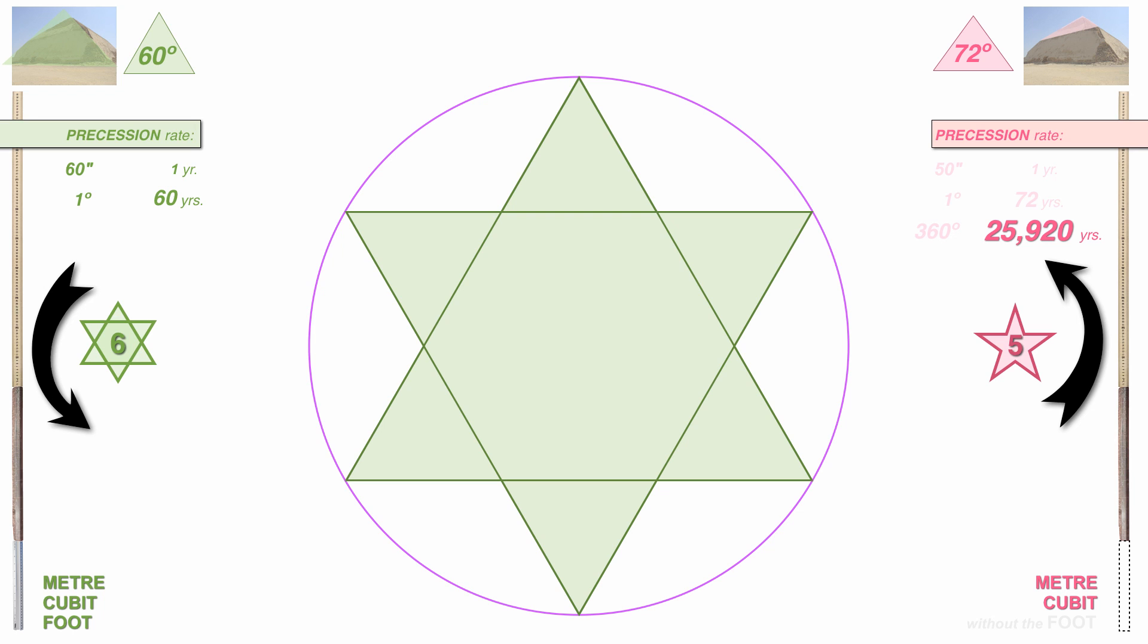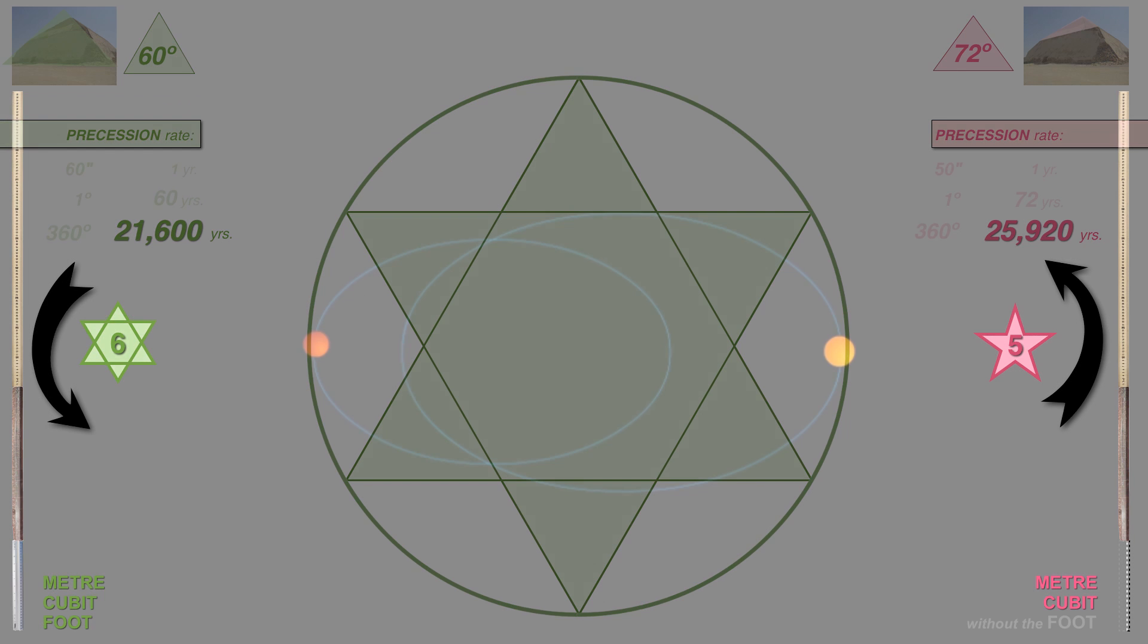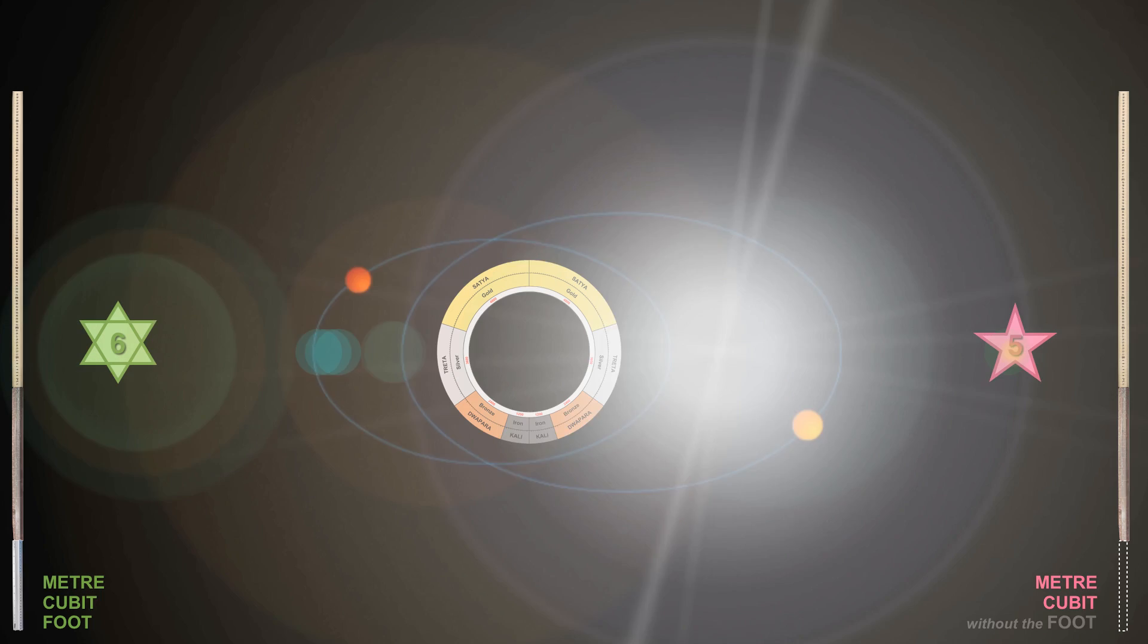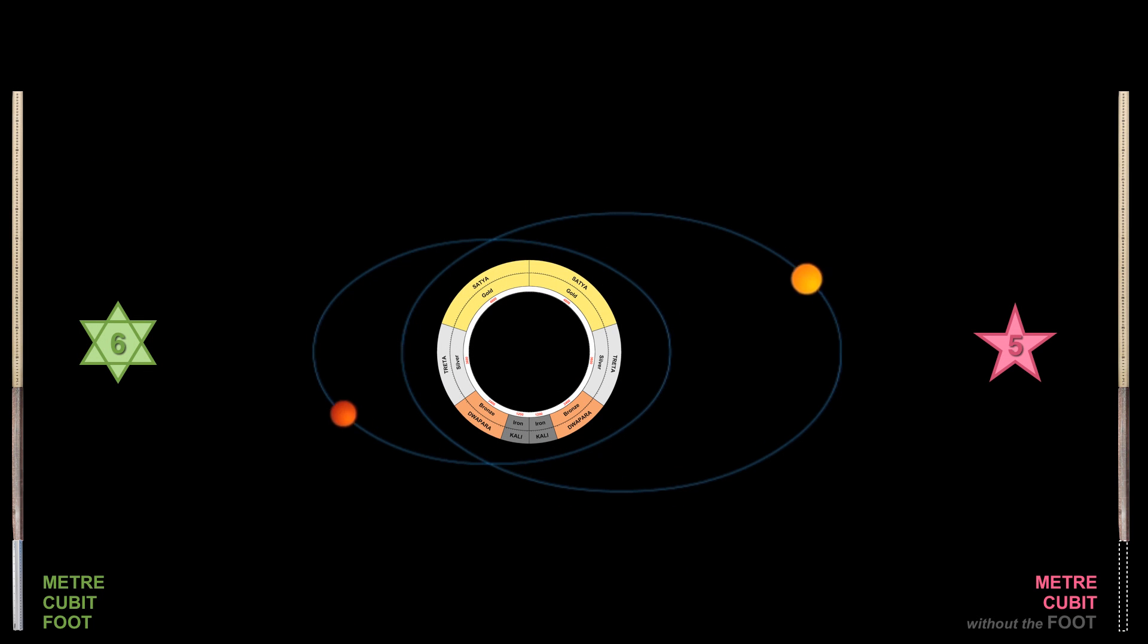And the full 360-degree cycle at that rate would be 21,600 years. Let's see that theory in action. The BRI's model shows our sun bound in an elliptical orbit with a binary star.